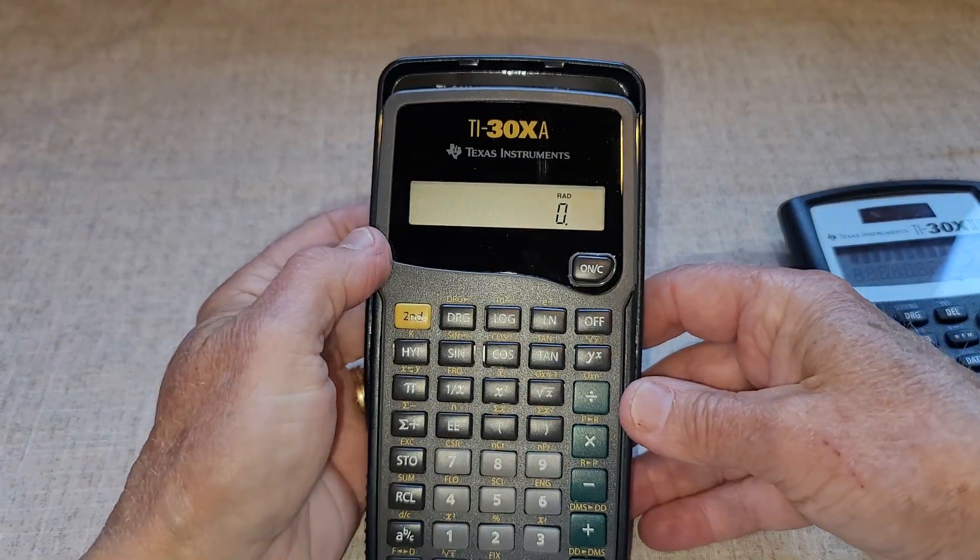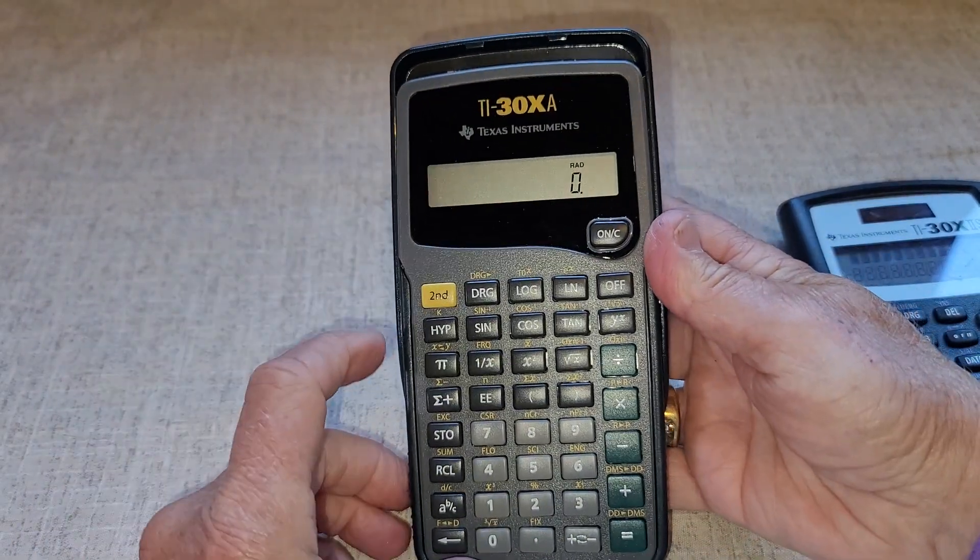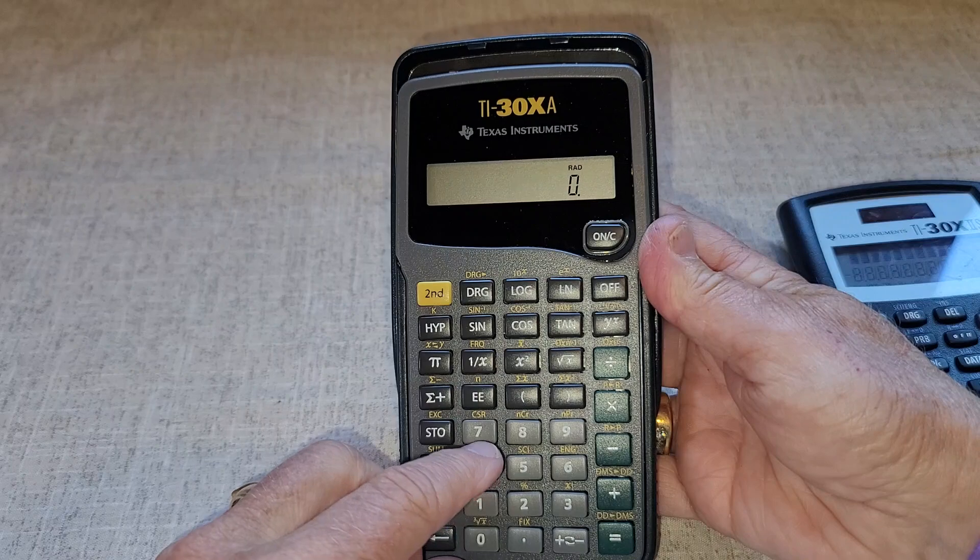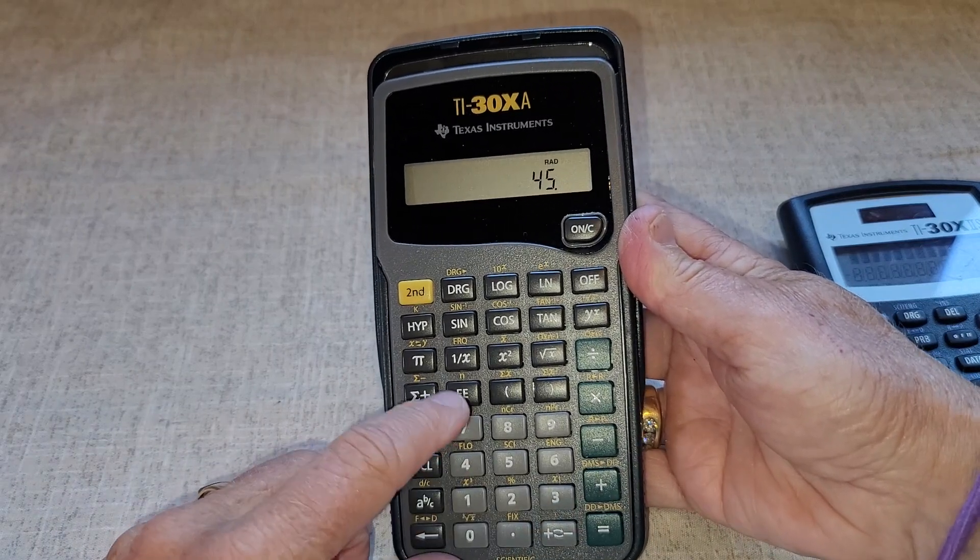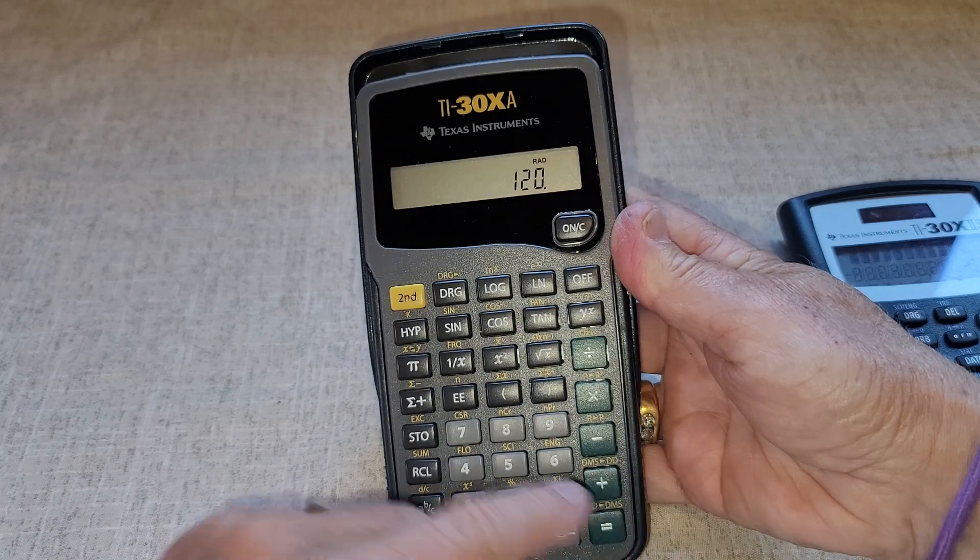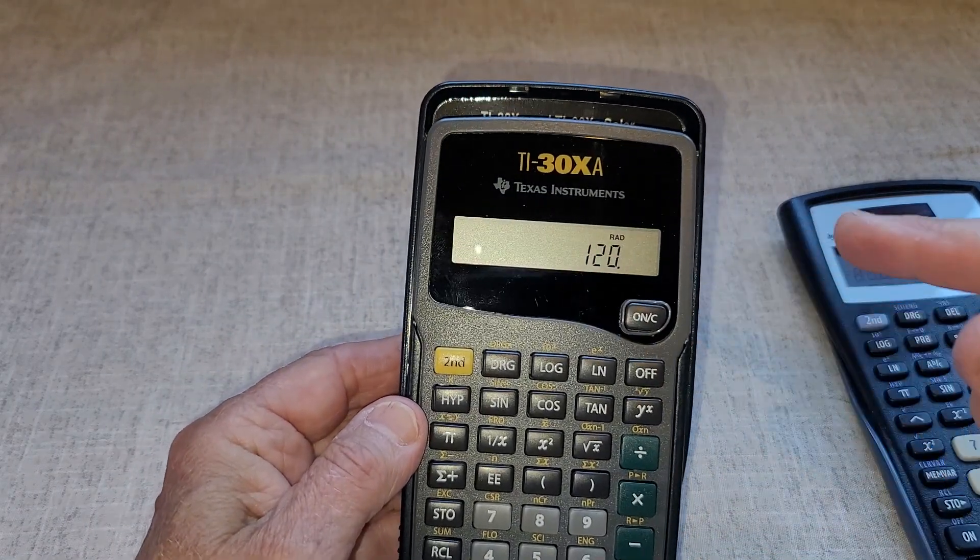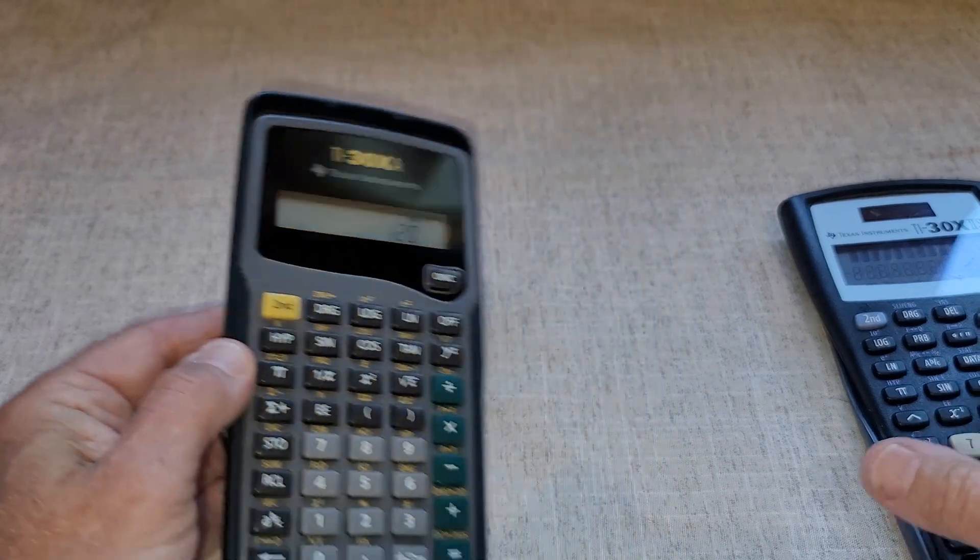The difference with this one here, the 30XA, is everything is on one line. So if I did 45 plus 75 equals, you can see that it's all one line, but you don't know what numbers you entered.